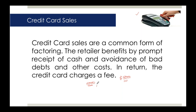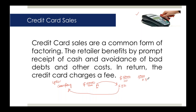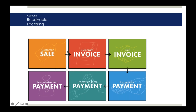You will receive this money in two or three working days from the customer's bank. The bank deducts a commission - say 2%, 2.5%, 3%, or 3.5% depending on the card type. On a $5,000 transaction at 3%, you would receive $4,850, with $150 going to the bank as commission. You get cash quickly but bear this cost.